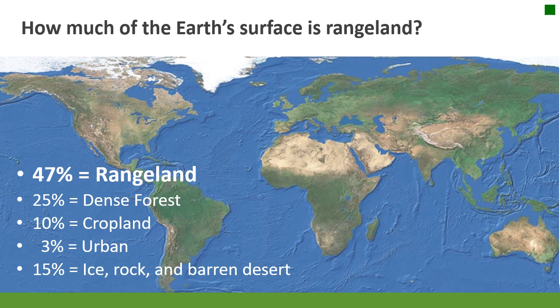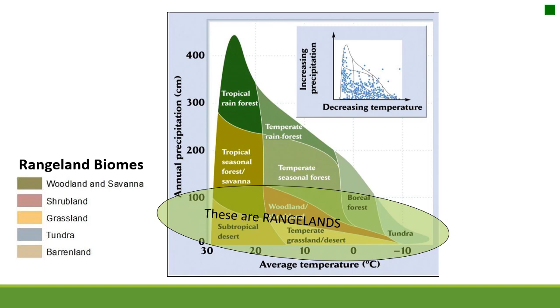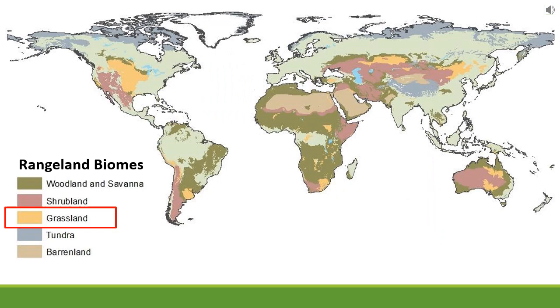I have colleagues in Turkey looking at the same shrub dynamics that I do — sagebrush here versus shrubs in Turkey. There are so many possibilities, and I hope as we go through today and look at these different rangelands across the world, you can see the connections and that your possibilities are limitless. Rangeland biomes fall on the lower end of precipitation and a wide range in temperature — we are definitely not in tropical rainforests.